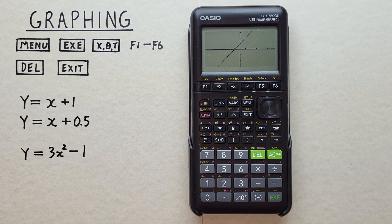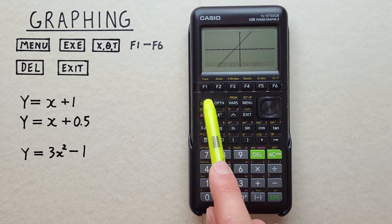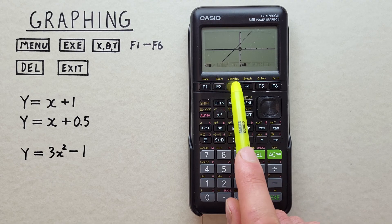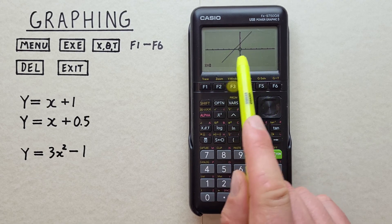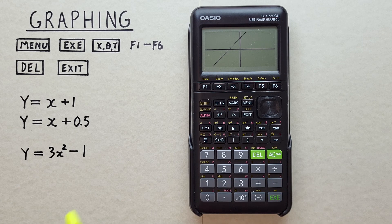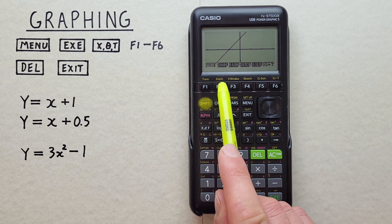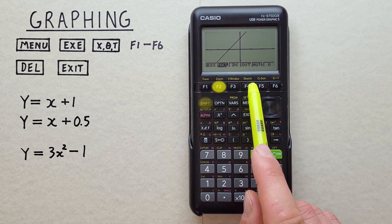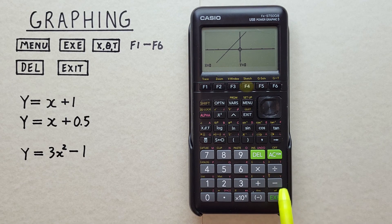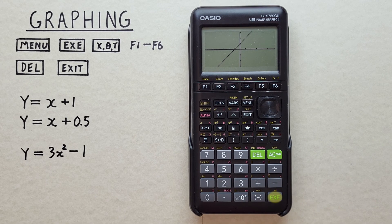We can also zoom in and out with the zoom function. For example, if we press shift zoom F3 for zoom in, we see the cursor flashing there. And if we hit EXE, we've zoomed in. If we want to zoom out, we go shift zoom F4 for out, hit EXE, and we've zoomed out.